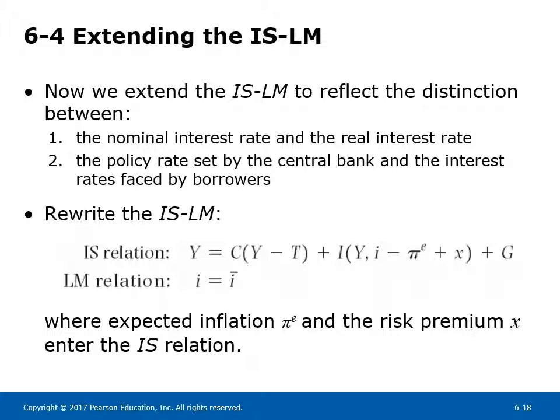Section 6-4: Extending the IS-LM. We now extend the IS-LM to reflect the distinction between: (1) the nominal interest rate and the real interest rate, and (2) the policy rate set by the central bank and the interest rates faced by borrowers. The interest rate that enters the IS relation is the real interest rate — the difference between the nominal interest rate I and the expected inflation rate π^e. The interest rate that matters for borrowers is the real interest rate plus the risk premium X. The central bank chooses the real policy rate R. The interest rate faced by borrowers, which determines aggregate demand, depends on the expected inflation rate π^e and the risk premium X, both of which enter the IS relation.